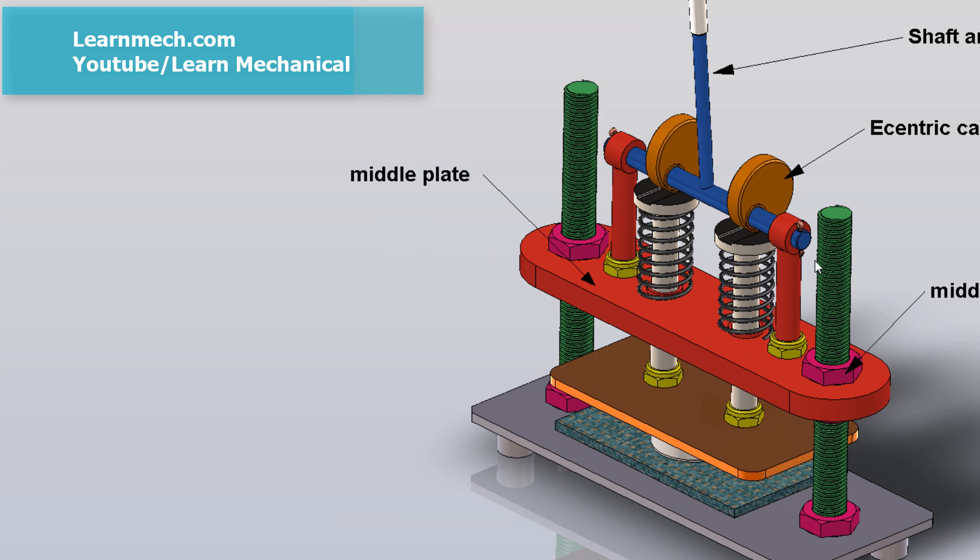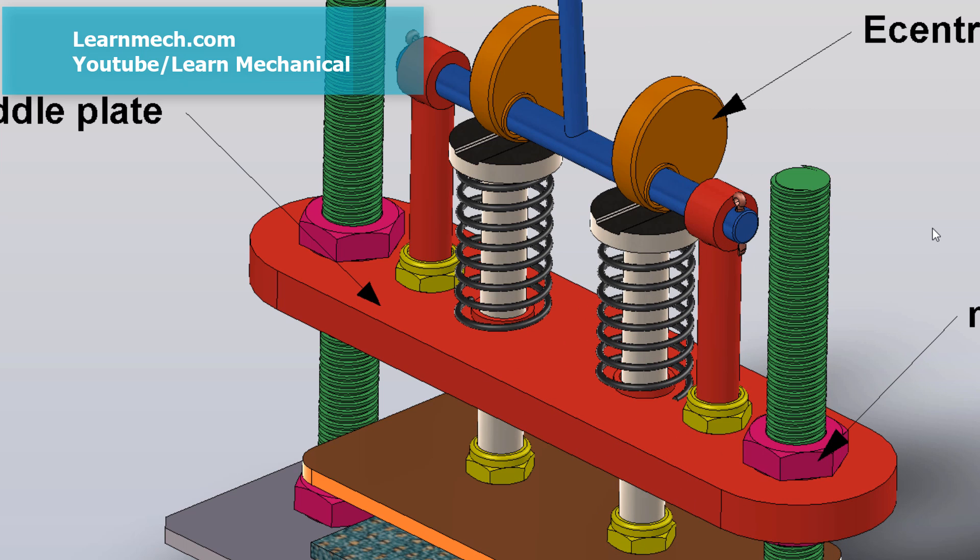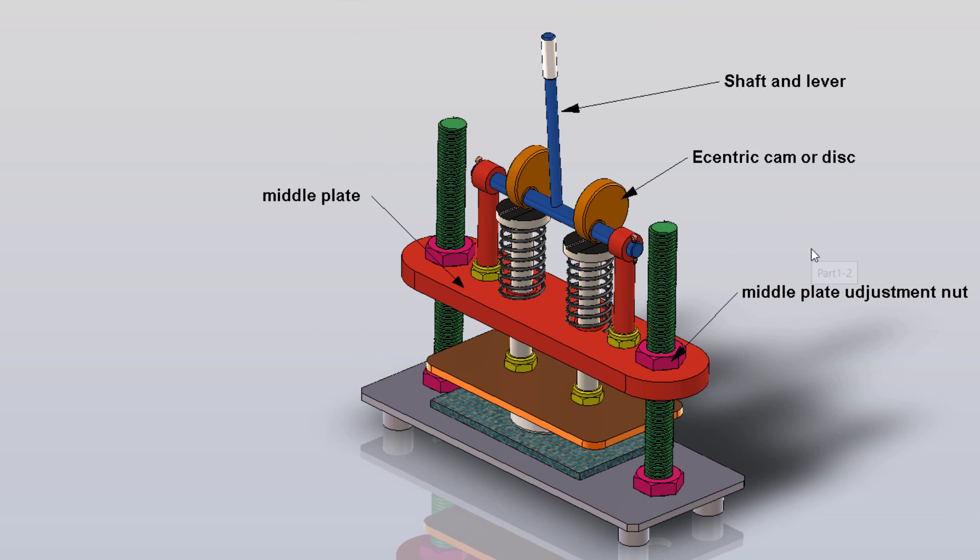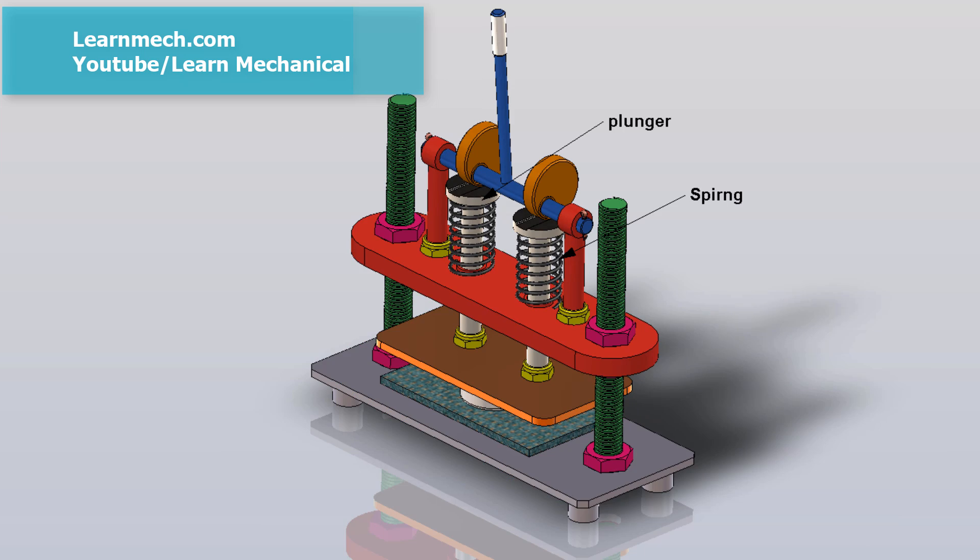Eccentric discs or cams are attached to the handle shaft. The spring gets compressed when the plunger moves down and returns to its original position when the handle moves upward.